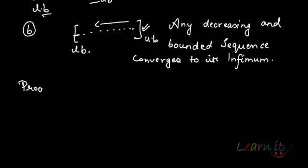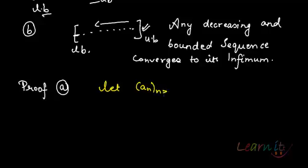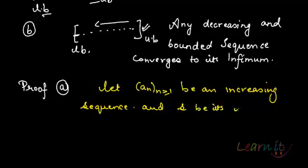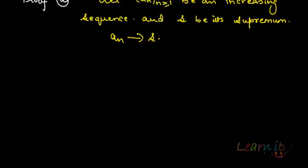We will prove this analytically. Let us do a proof of part A first. Let a_n, for n greater than or equal to 1, be an increasing sequence, and let S be its supremum. We will prove that a_n tends to S.